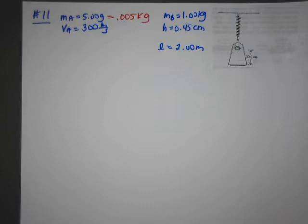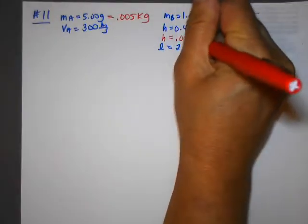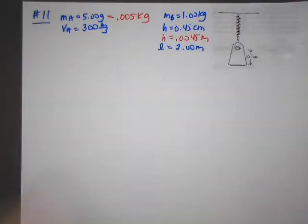Suspended on a string two meters long, the center of mass of the block is observed to rise 0.45 centimeters, so I called that H. Find the speed of the bullet as it emerges from the block if its initial speed was 300. Okay, so I'll change this centimeters to meters, and I don't think I have to do anything.